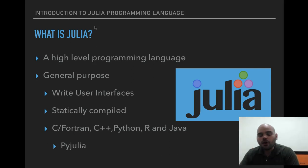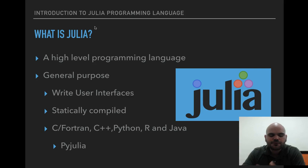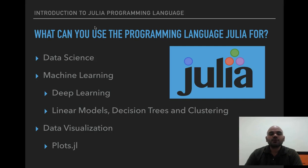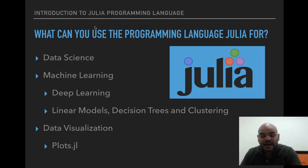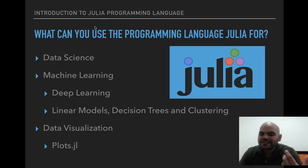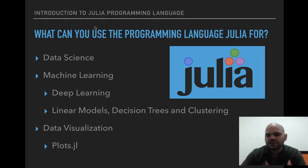You can also use it with R using something called R's JuliaCall, and I'm going to put a link in the description as well if you're interested in using it with R or Python. So what can you use Julia for? The first thing you can use it for is data science. You can perform online computations using OnlineStats.jl, work with databases, and it can be integrated with the Hadoop ecosystem.